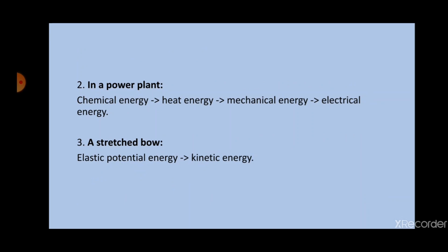The second example is in a power plant, also referred to as a power generator. In a power plant, the chemical energy of fuels like coal is converted into heat energy. This heat is used to boil water. The steam moves the shaft of a turbine and heat energy is transformed into mechanical energy. Finally, the turbine with the help of a generator produces electrical energy.